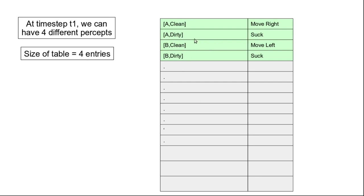For percept sequence 'A clean,' the action needed is 'move right.' For percept sequence 'A dirty,' the action is 'suck the dirt.' For percept sequence 'B clean,' the action is 'move left.' For percept sequence 'B dirty,' the action is 'suck.' In this lookup table we list what action needs to be performed for each percept sequence. For time step t1 we have four different possibilities.